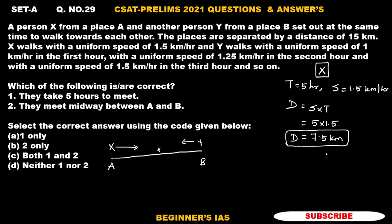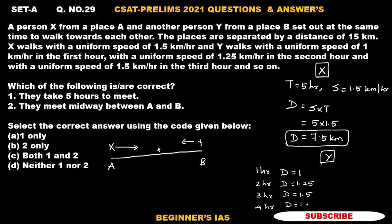Now we need to identify the distance covered by Y. Note that Y's speed varies, so distance also varies each hour. In the first hour, distance covered by Y is 1 km. In the second hour, speed increases to 1.25 km/h, so distance is 1.25 km. In the third hour, distance is 1.5 km. In the fourth hour, distance is 1.75 km. In the fifth hour, distance is 2 km. Now let us find the total distance covered by Y: 1 + 1.25 + 1.5 + 1.75 + 2 = 7.5 km.